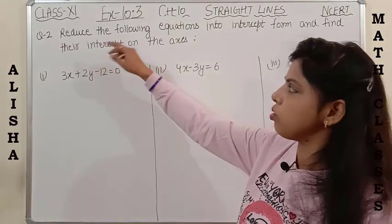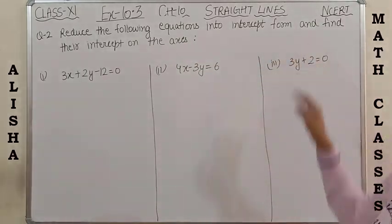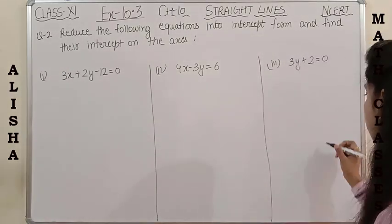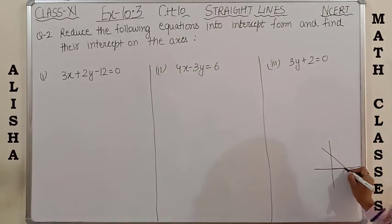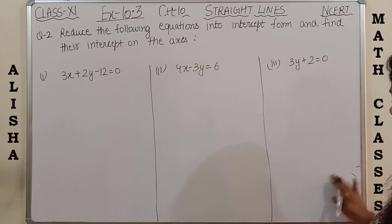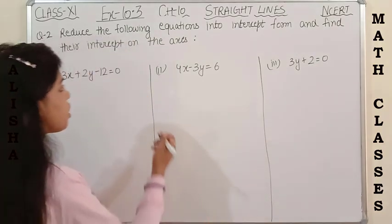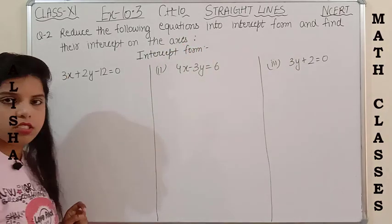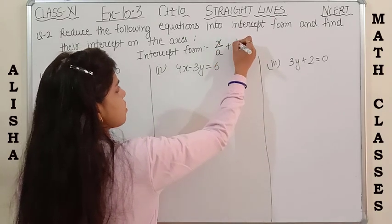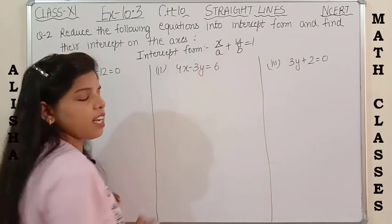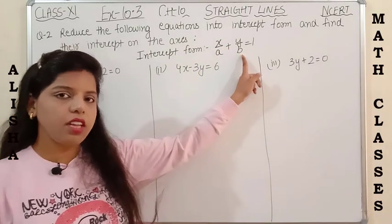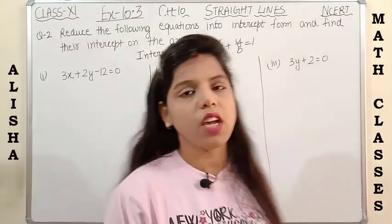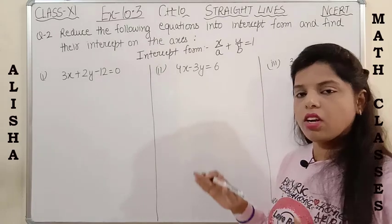Question 2: reduce the following equations into intercept form and find their intercepts with the axes — x-axis and y-axis. Remember the intercept form of a line is x/a + y/b = 1, where a is the intercept with the x-axis and b is the intercept with the y-axis. We need to convert all given equations into this standard form.